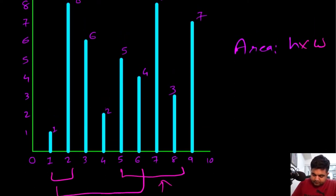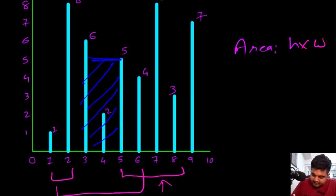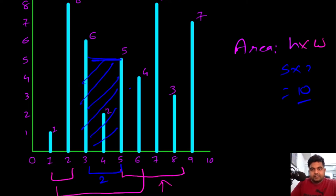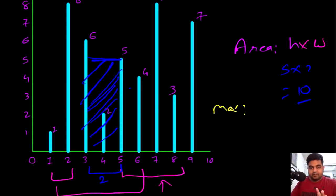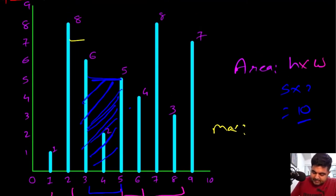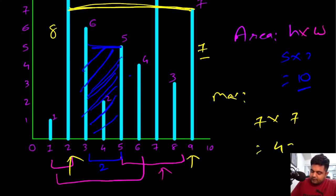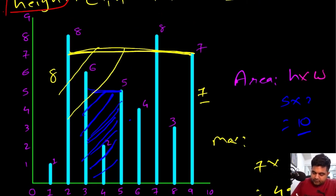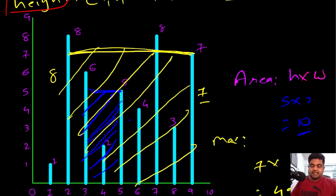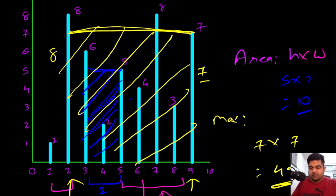For example, given a heights array, we can consider index one and index four: the minimum height is five and the width is two, giving area 10. The maximum container turns out to be between index two and nine, where heights are seven and eight — we choose seven as the height. Seven times seven equals 49, which is the maximum water we can contain.